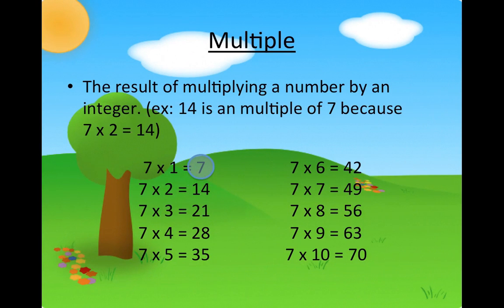7, 14, 21, 28, 35, 42, 49, 56, 63, and 70 are multiples of 7.